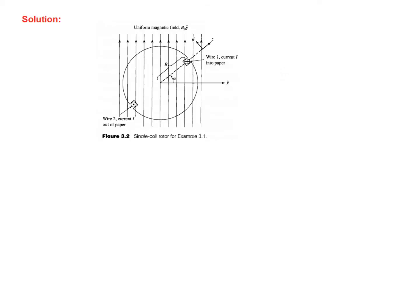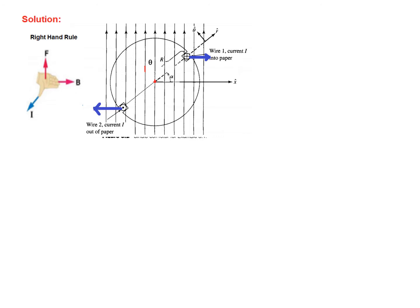Now let's come to the solution. Applying the right-hand rule: at the point where current goes into the page (cross sign), we point all four fingers in the field direction and the thumb into the page. The palm then shows the direction of the force at that location.